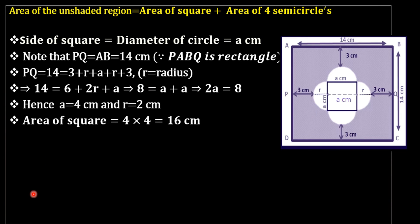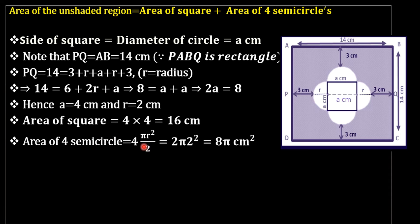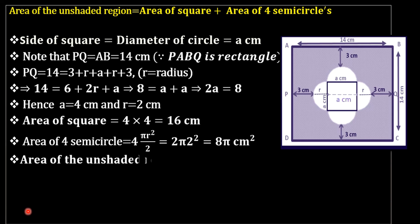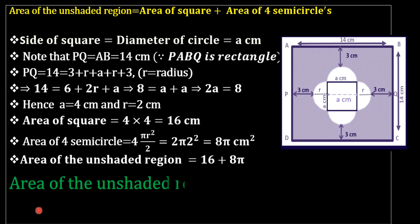Area of the square equals 4 × 4 = 16 cm². Area of 4 semicircles equals 4 × (πr²/2) = 8π cm². Therefore, area of the unshaded region equals 16 + 8π cm². Substituting π = 3.14, the area of the unshaded region equals 41.12 cm².